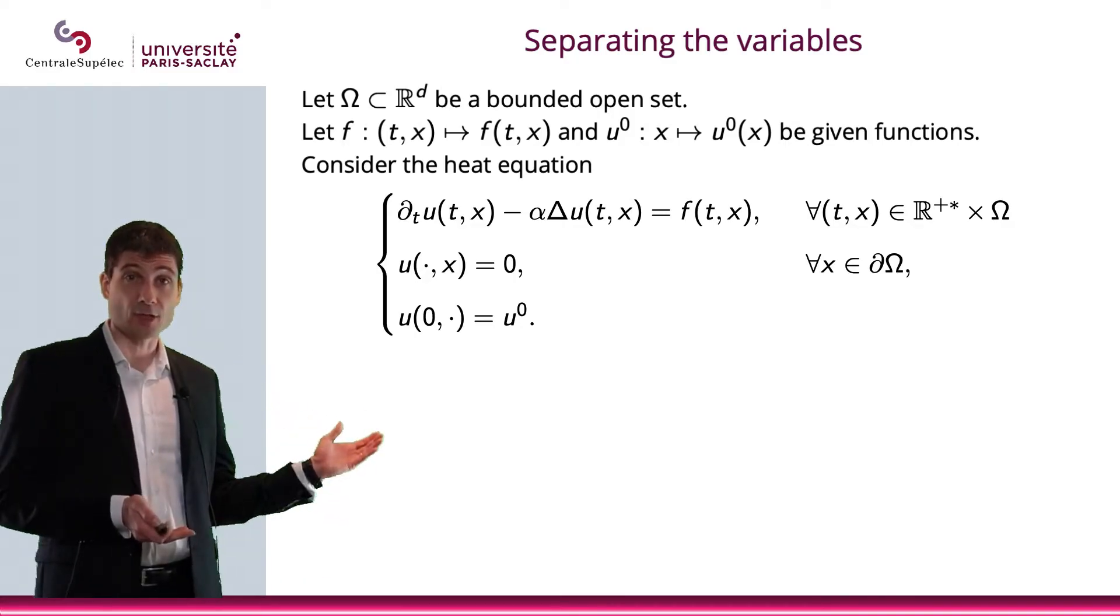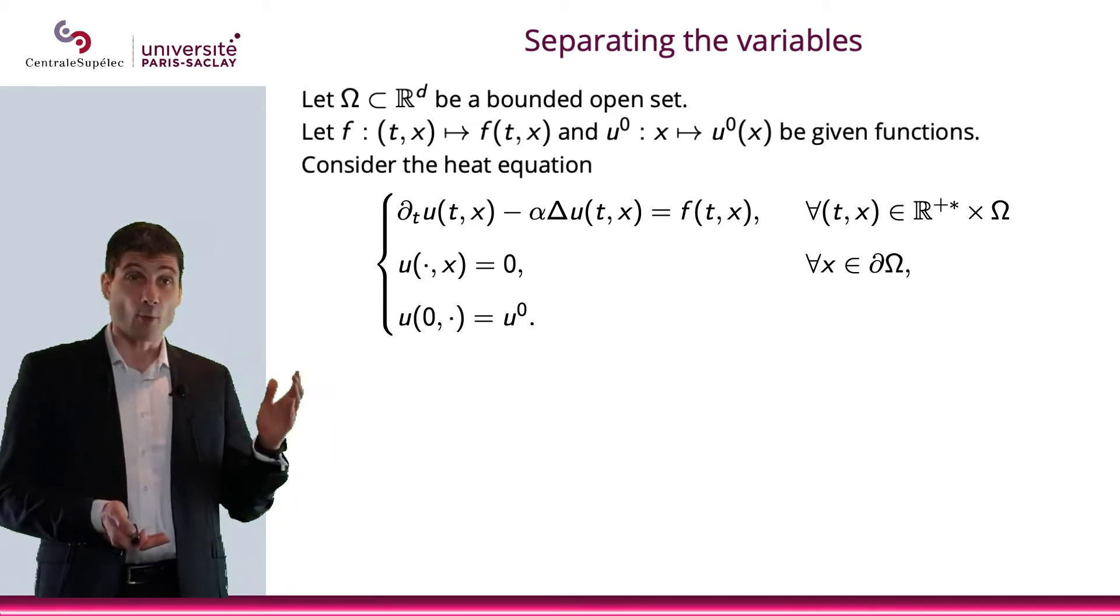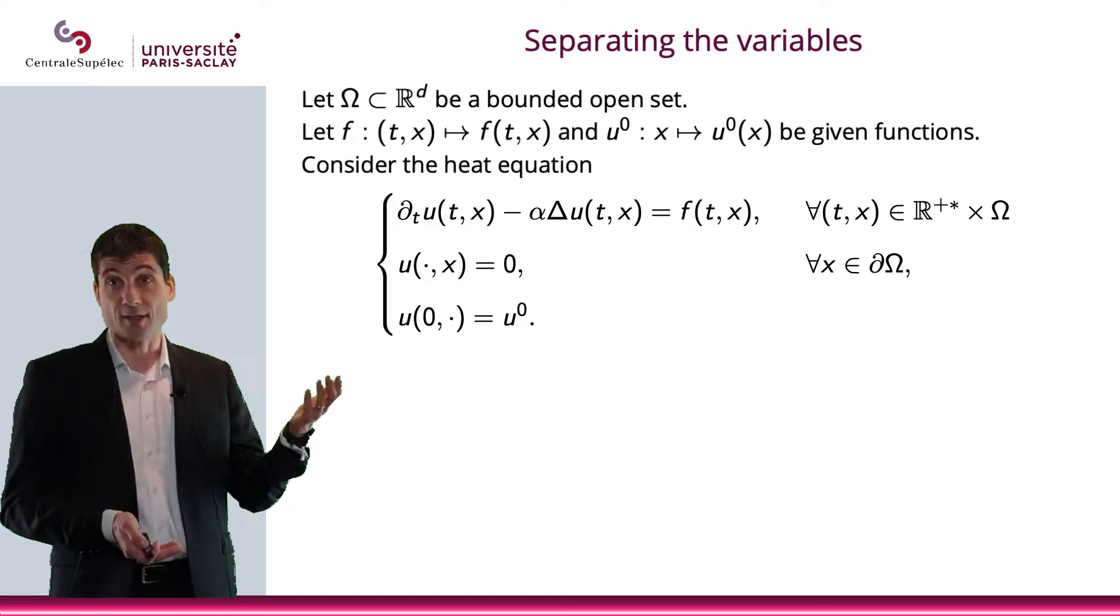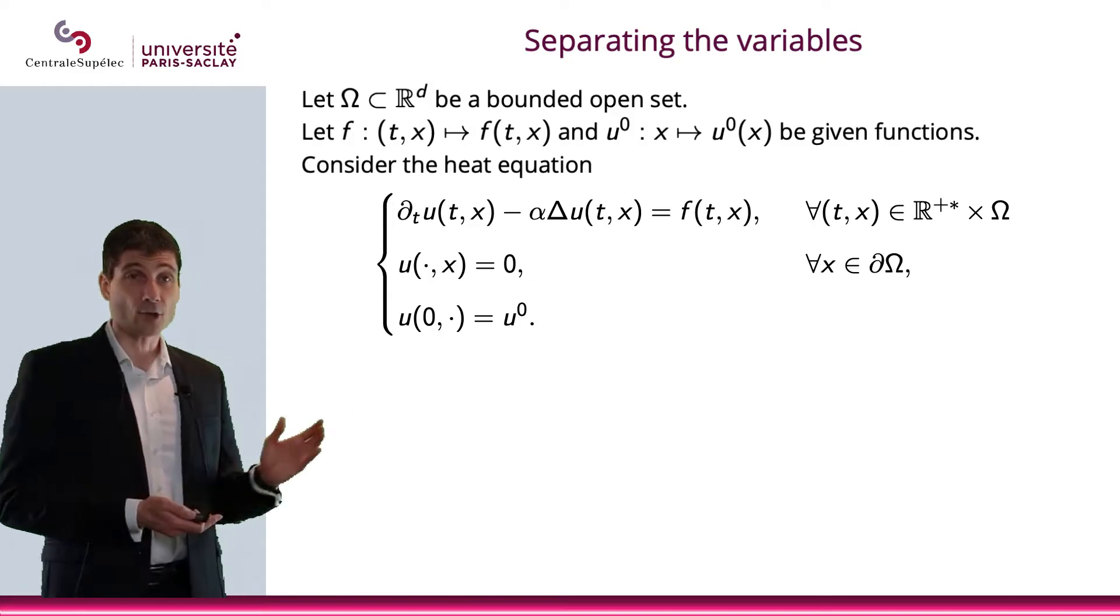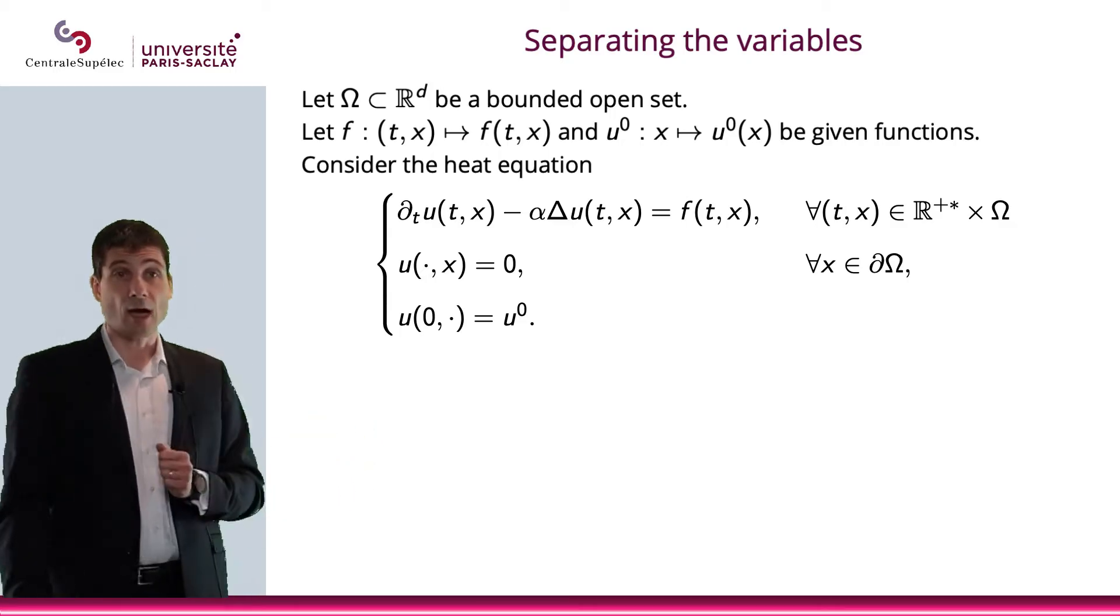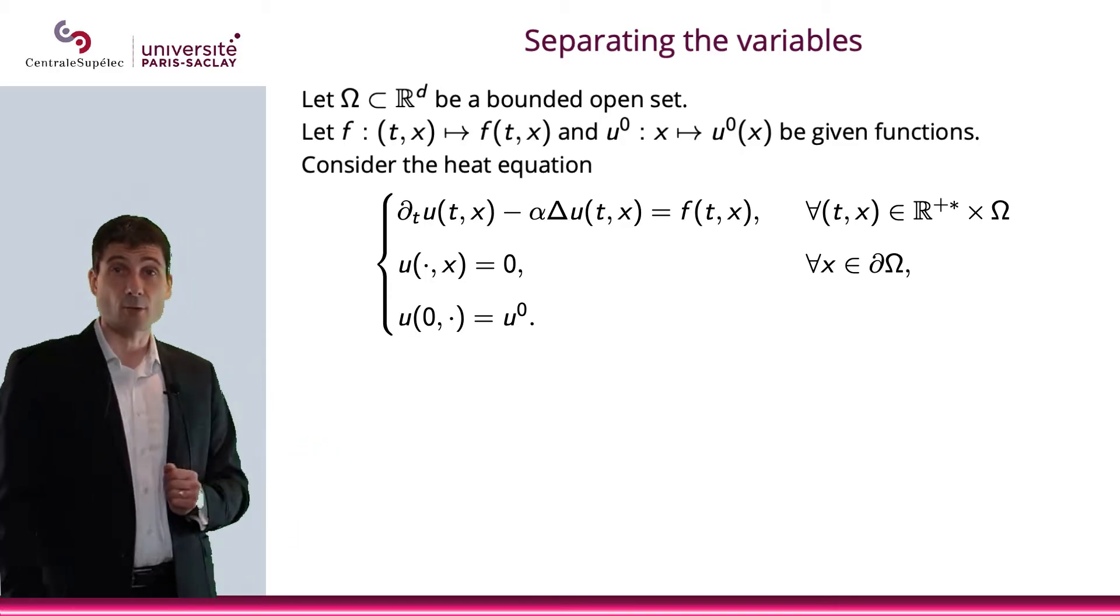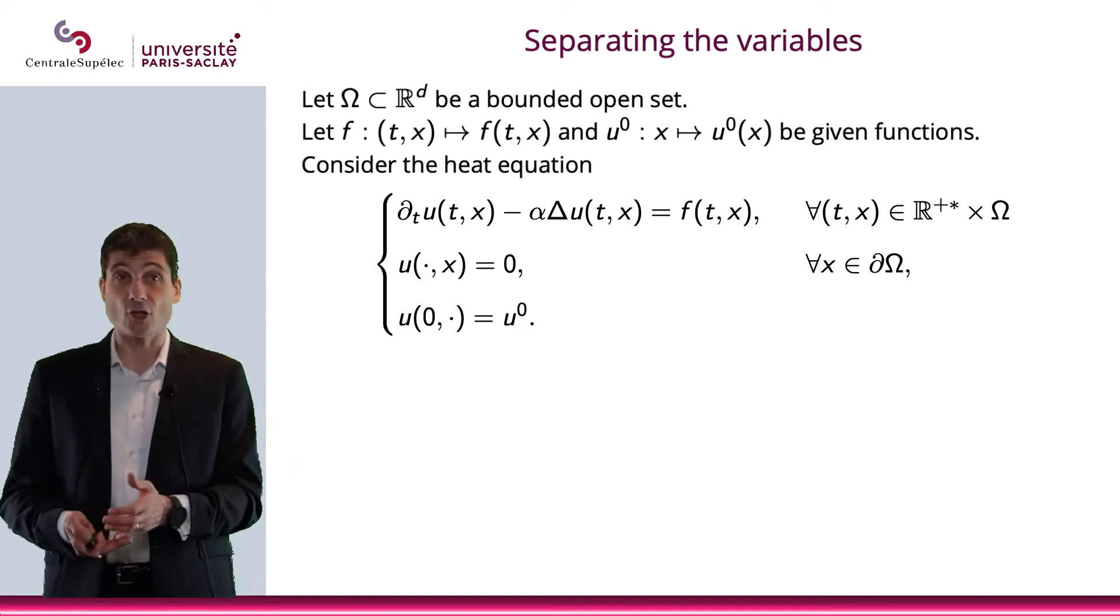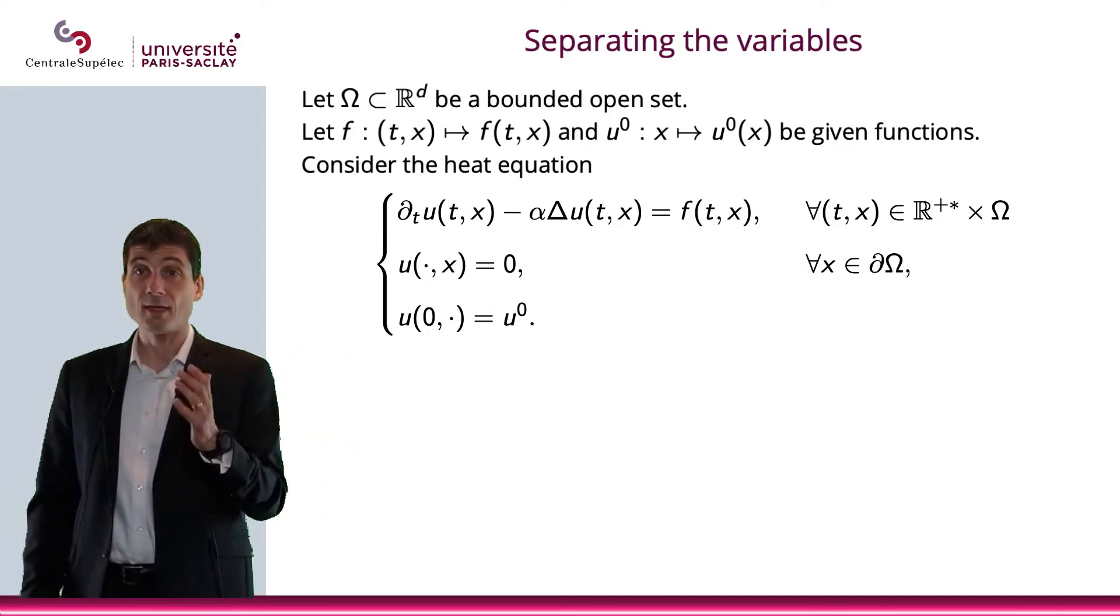Then, let's consider the heat equation. The heat equation is going to be ∂_t u - α Δu = f(t,x), where f is a given function that takes t and x and returns f(t,x). So it goes from R^{d+1} to R. I also have a boundary condition here, which is a homogeneous Dirichlet boundary condition: u at any time for x on the boundary is equal to 0. And an initial condition, when t equals 0, then the function u(0,·) is basically that given function u^0. So I know f and I know u^0. These will be given functions.